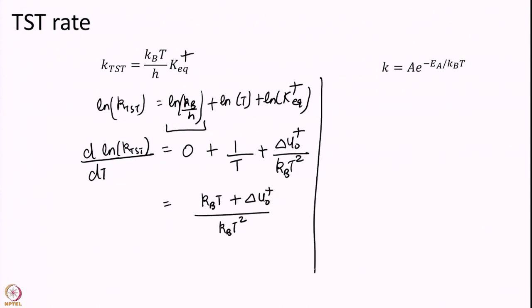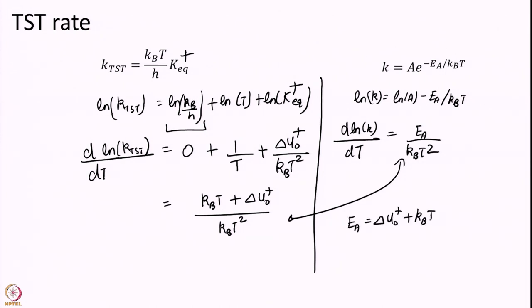But if I compare this with the Arrhenius equation, if I do the same thing here and take d ln K over dT, the first term will vanish and I will get EA over KT square. And if I compare these two, what I get is EA is delta U naught dagger plus KT, or delta U naught is EA minus KT.